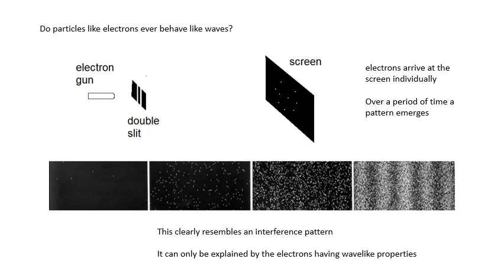You can only explain that by thinking of the electrons as behaving like waves. One thing is, though, it's not a standard interference pattern because it's one electron at a time — each electron isn't interfering with any other electrons. Nevertheless, the pattern builds up. It's all to do with probability. We can work out the probability of the electron arriving at a certain place using what we call a wave function — a probability density function.